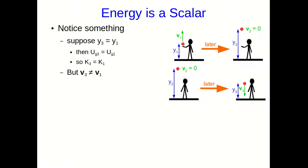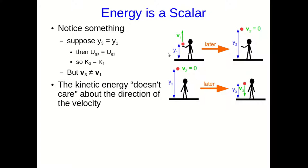But notice, the velocities, V3 and V1, are not the same, because they're in opposite directions. But this is telling you that while those velocities are in the opposite directions, the speeds are the same. Because the kinetic energy doesn't care about the direction of the velocity. It only cares about speed. Energy is a scalar.